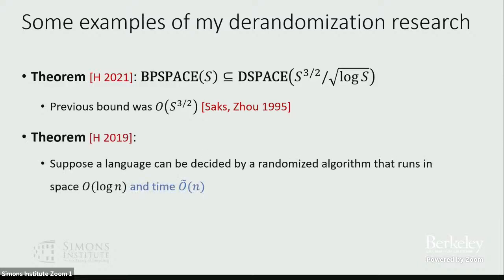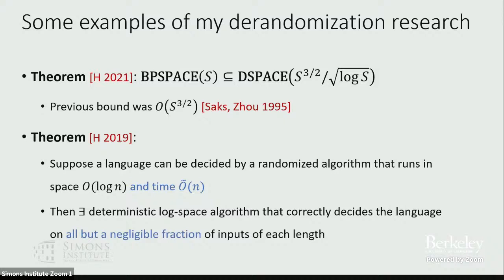Another example from my own work: suppose you can design a randomized algorithm that simultaneously uses a small amount of space and a small amount of time — maybe log-space quasi-linear time. Then we can get a deterministic algorithm for that problem that still runs in logarithmic space, with the caveat that occasionally it gives the wrong answer — it might give the wrong answer on some small fraction of inputs. Let me give you a taste of the techniques behind this second theorem.